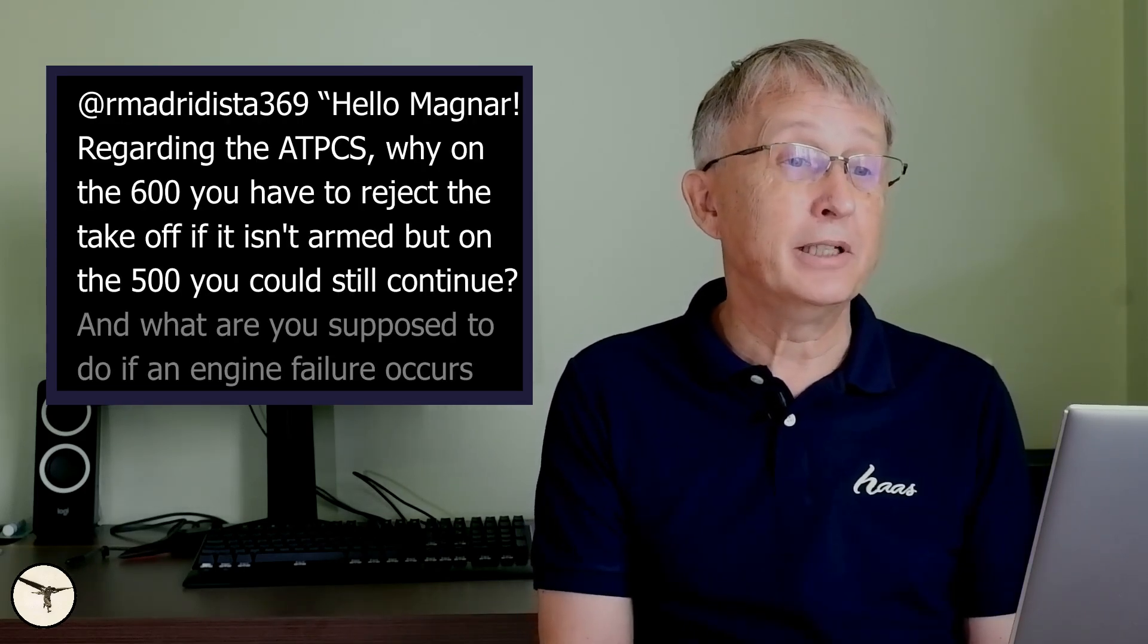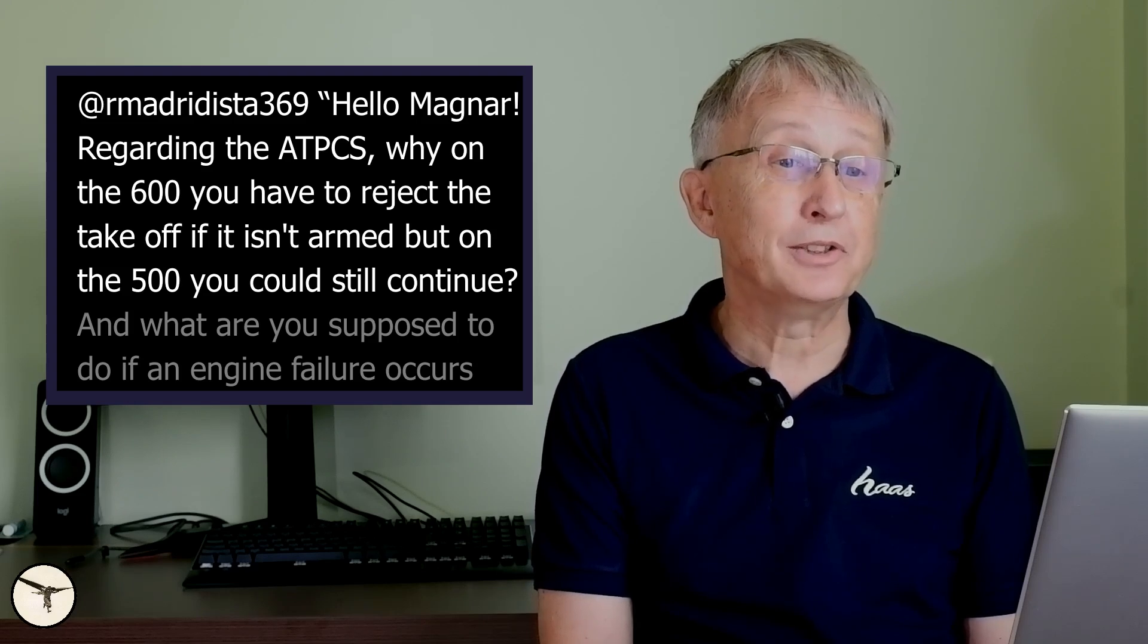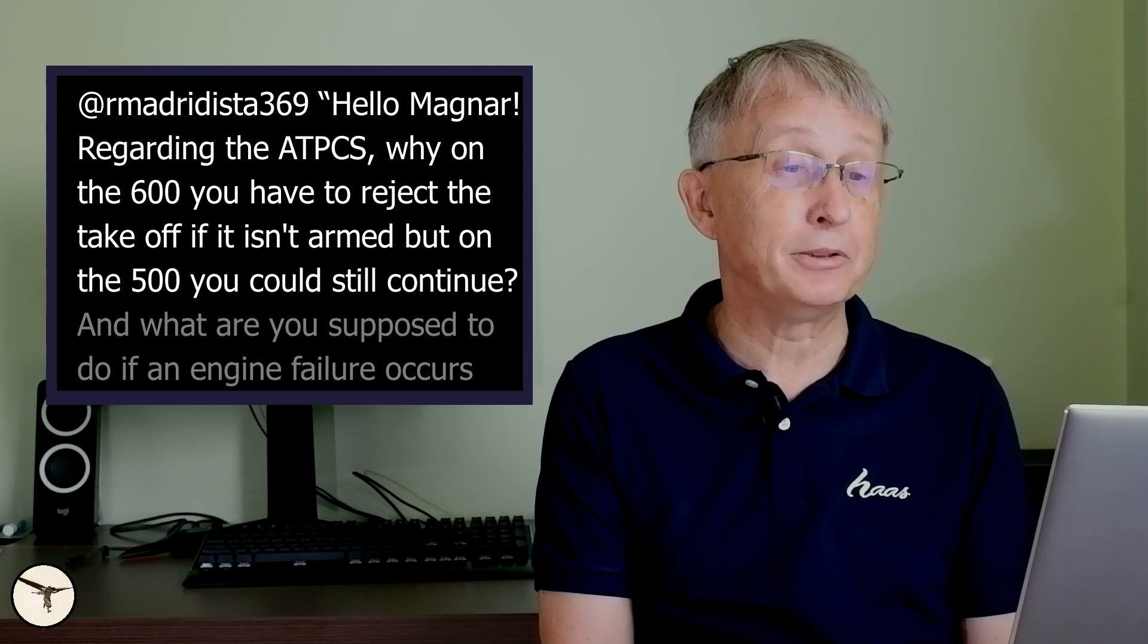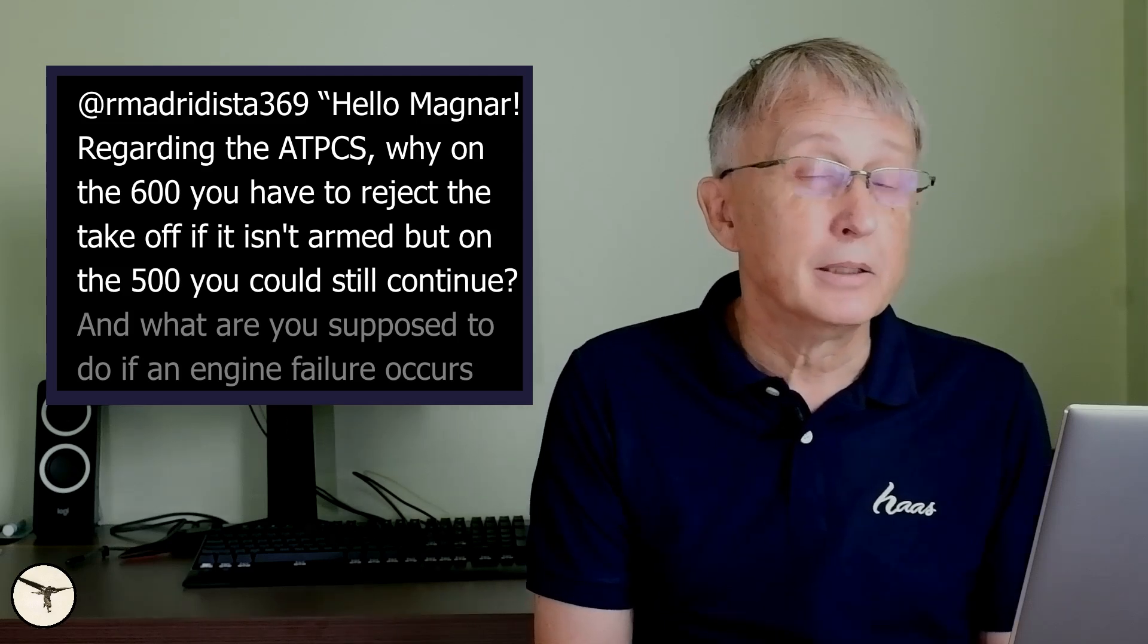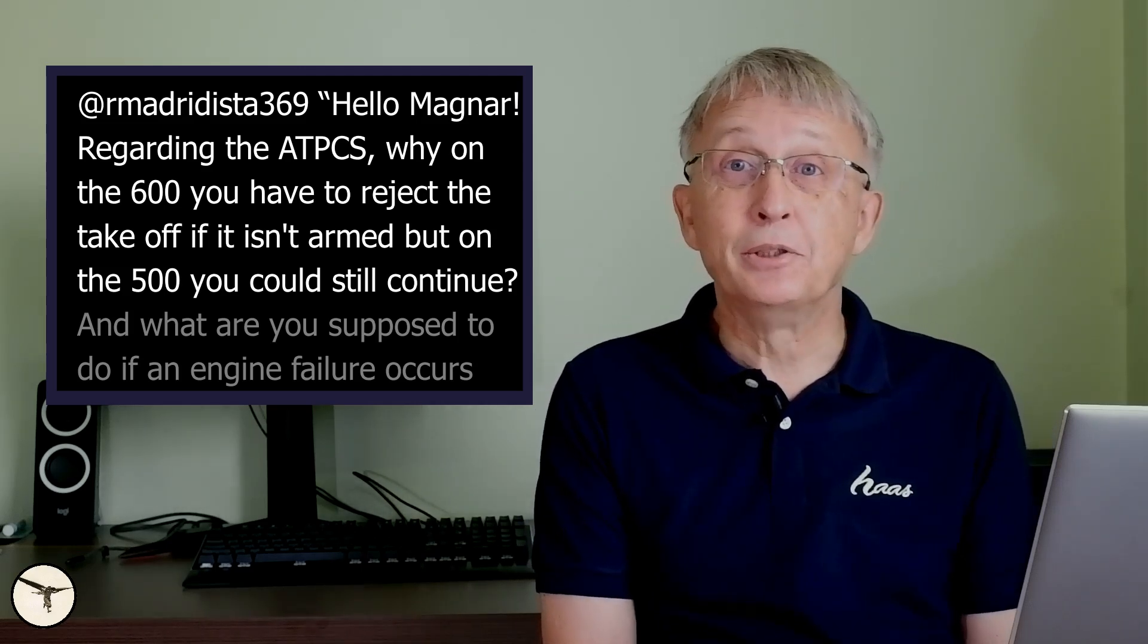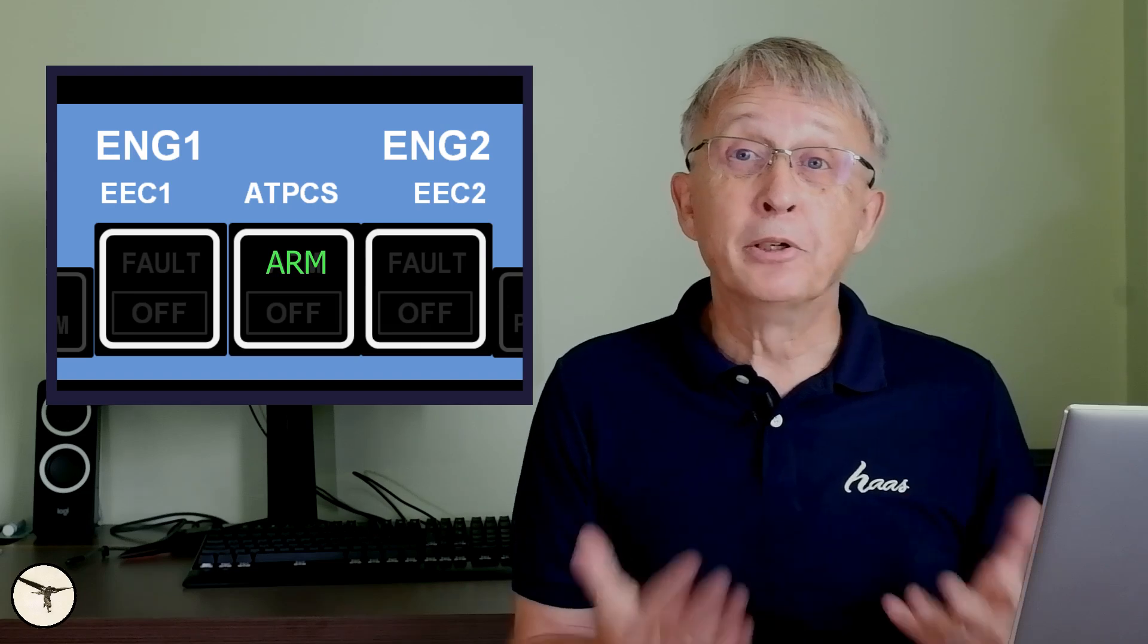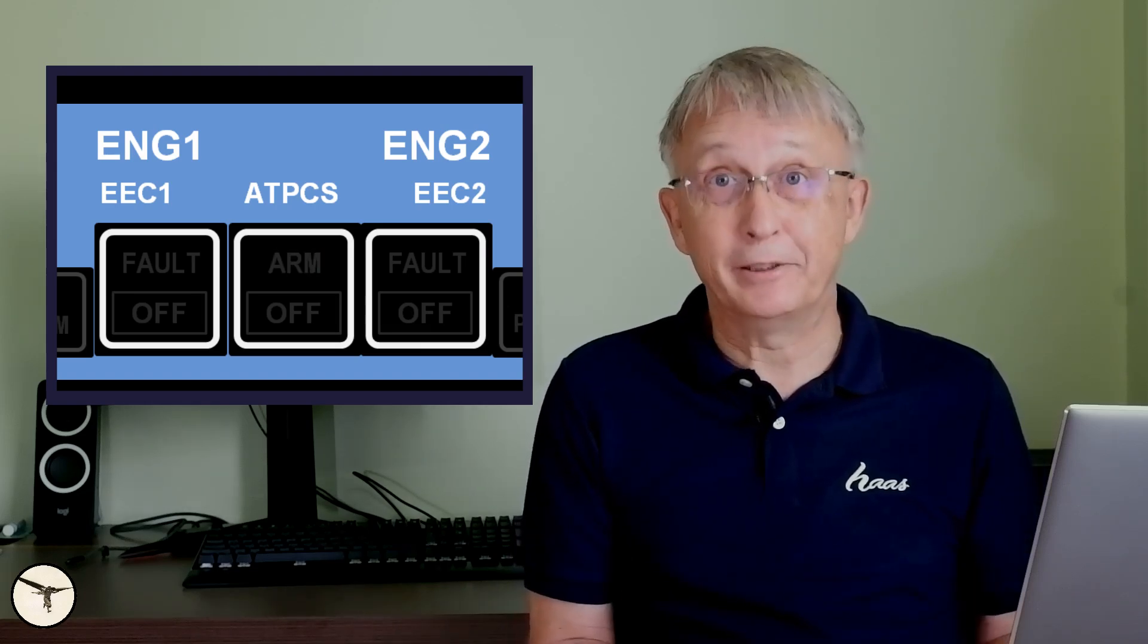Hello Magnar, regarding the ATPCS, why on the 600 you have to reject the takeoff if it isn't armed, but on the 500 you could still continue? That is not correct. The takeoff briefing as given by ATR is, let's say the first officer is pilot flying, then you will brief any failure before V1, you call stop and stop the aircraft. If you don't see the ATPCS arm light, you have a failure.